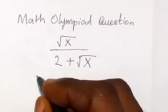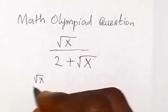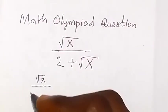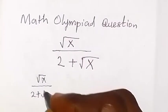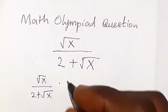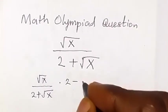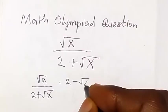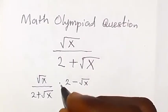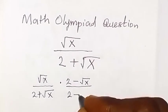So we now have root x divided by 2 plus root x, and let's multiply it by the conjugate and also divide it by that. That's divided by 2 minus root x. So multiply by 2 minus root x also divided by 2 minus root x.